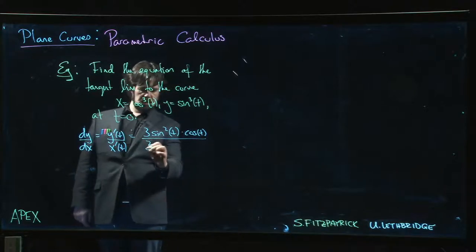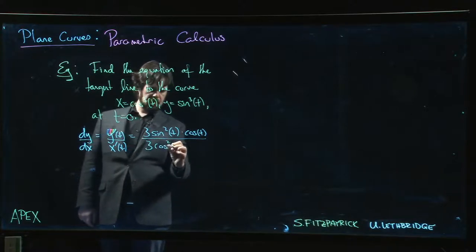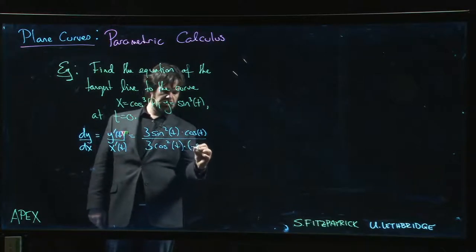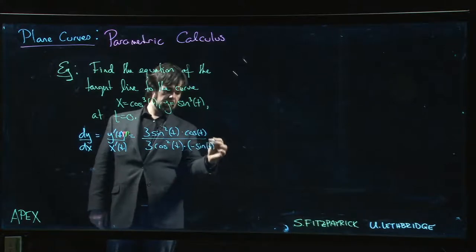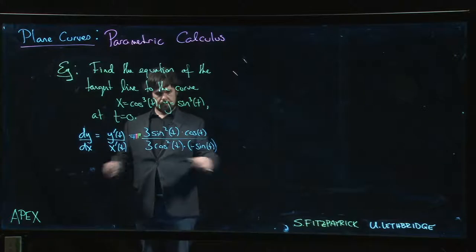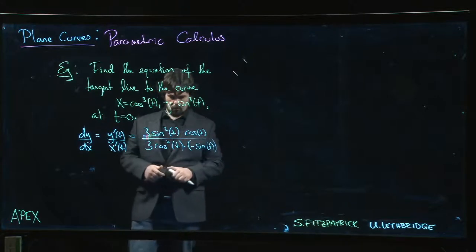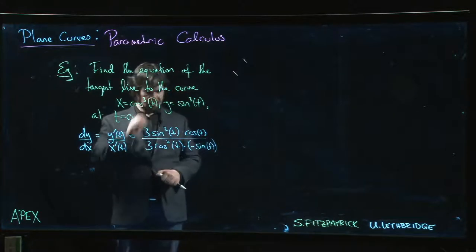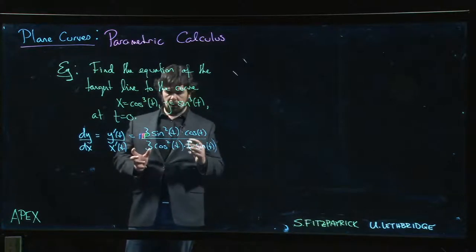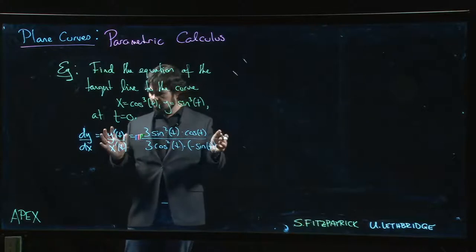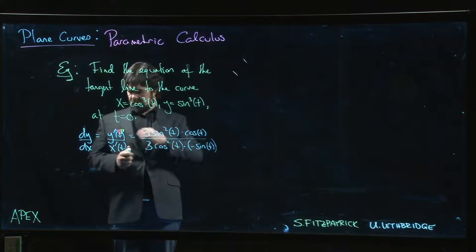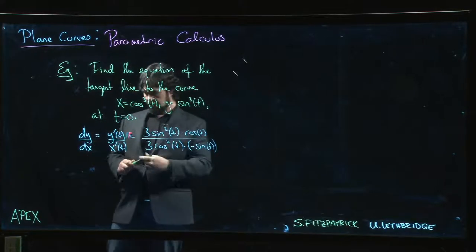x prime, we get 3 cosine squared t times the derivative of the inside, which is minus sine t. Now we do run into a bit of trouble though at zero.